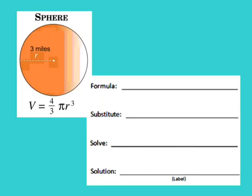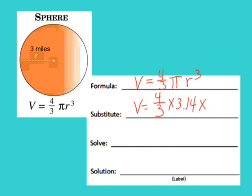Here is the formula for volume of a sphere — and this is a pretty big sphere with a radius of 3 miles. The formula is four-thirds times pi times the radius cubed. We substitute in: four-thirds times 3.14, and our radius is 3, cubed. We do the exponent first, so 3 cubed is 27, giving us four-thirds times 3.14 times 27.